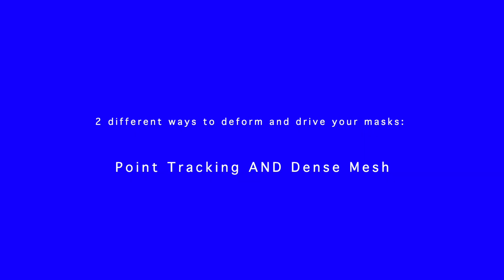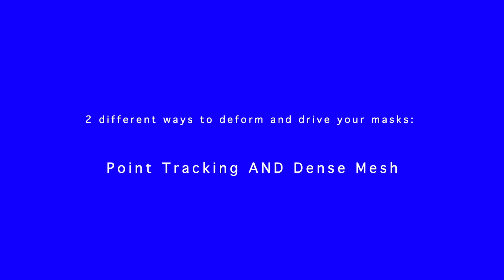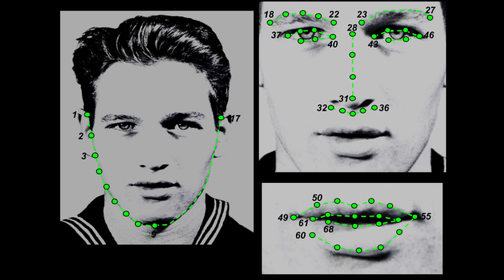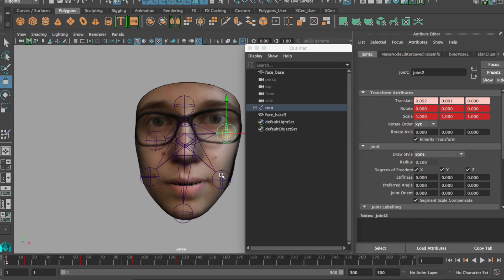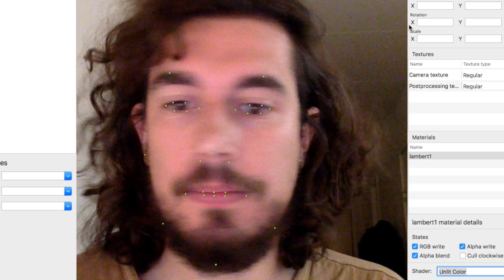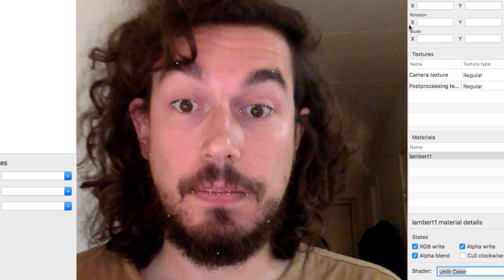Our SDK provides two kinds of facial tracking: point tracking and dense mesh. The first one tracks individual facial features, and from there you can use those points to deform your own 3D mesh. You can use as many points as you like according to your needs, or you can parent assets to a specific point, like we did with this big cigar.